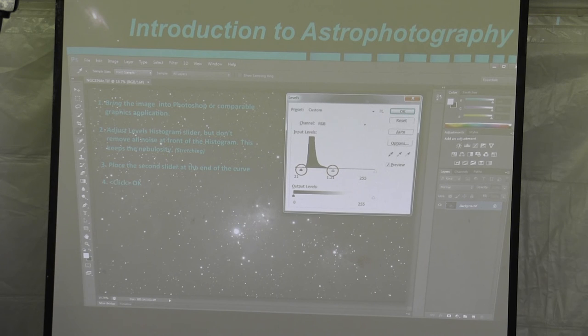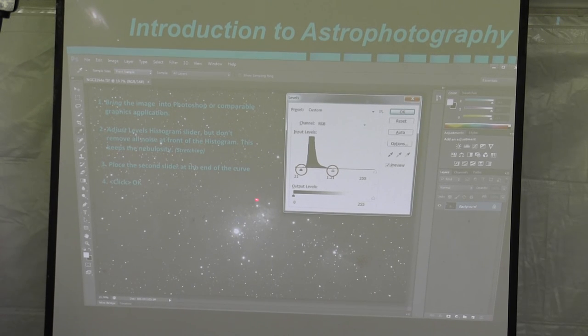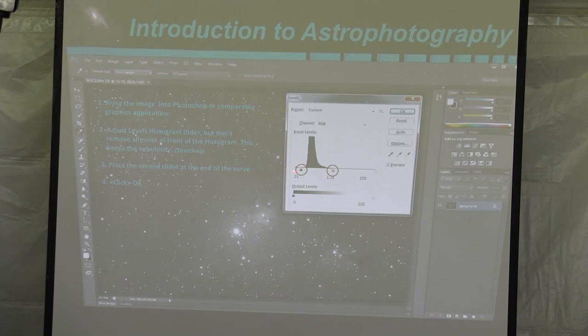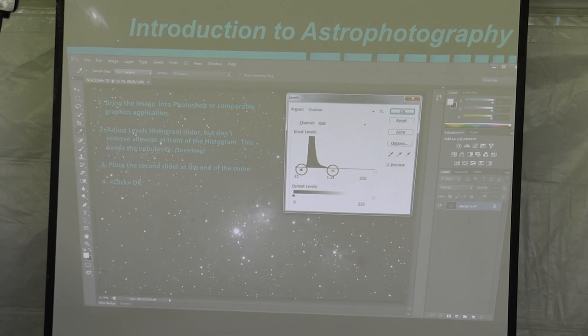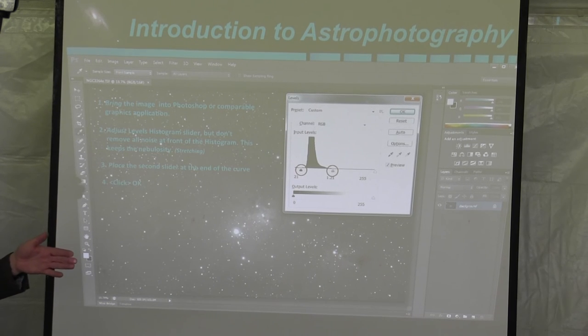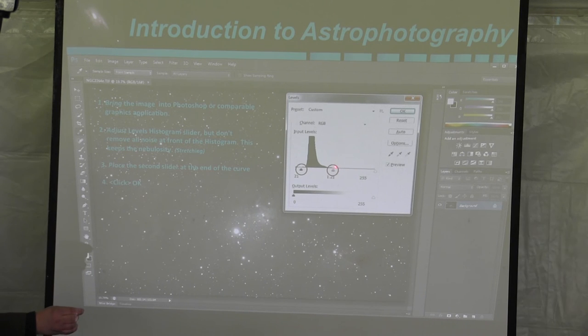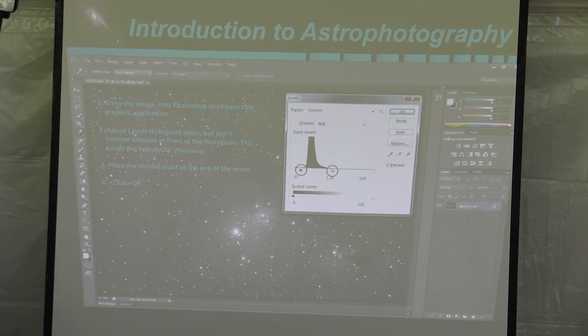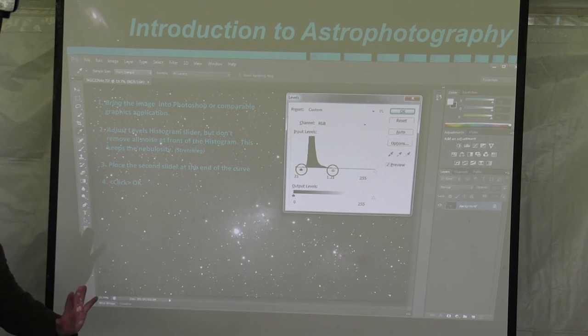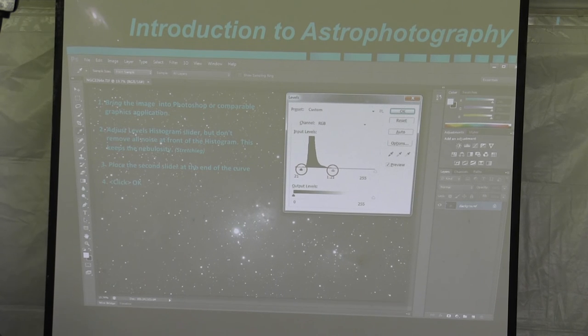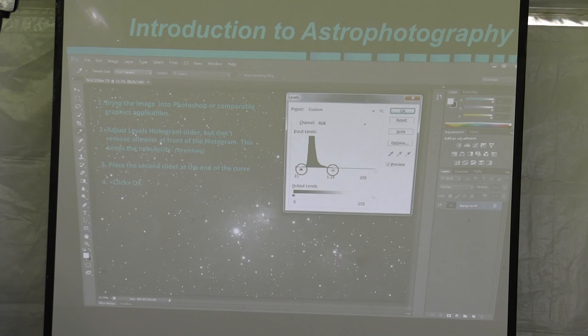Once you bring in the picture, you wanna adjust the levels of the histogram. This is known as stretching. What you wanna do is, you wanna take this slider and move it to the right, and it's gonna delete all the noise that's in front of the histogram. But what I've learned is, you don't wanna go right up and butt up against it, because this little bit right here tends to be the nebulosity that's found in nebulas. Then you wanna take this background slider, which is your brightness, and move it forward to where it just begins to touch your histogram.